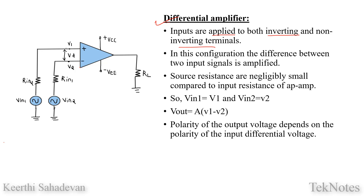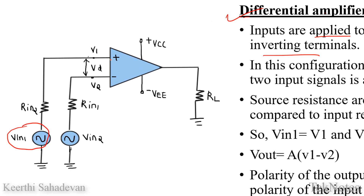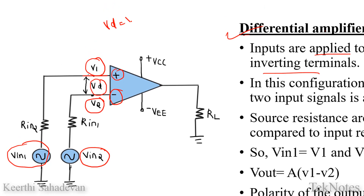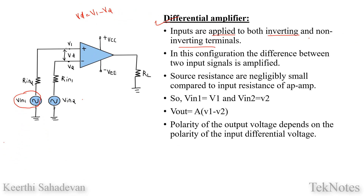Inputs are applied to the Differential Amplifier. The first input is applied to the Non-Inverting Terminal, and the second input, VIn2, is applied to the Inverting Terminal through a resistor. VD represents the differential voltage. VD is equal to V1 minus V2. In this configuration, the difference between two input signals is amplified.